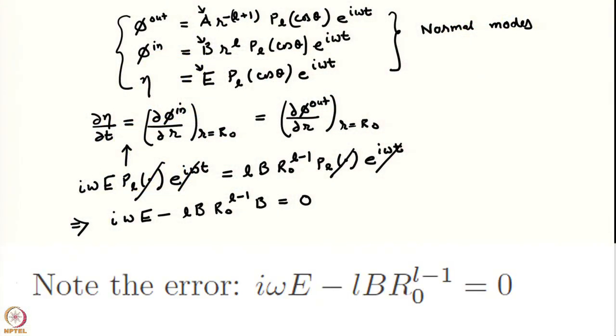We were doing normal mode analysis for perturbations about a spherical base state. We had a perturbation velocity potential outside as well as inside, and we had guessed the forms and arrived at all the boundary conditions. There were two boundary conditions from the linearized kinematic boundary condition, and one from the difference of pressure. We have already used one of the equalities in the linearized kinematic boundary condition to achieve a homogeneous equation in E and B.